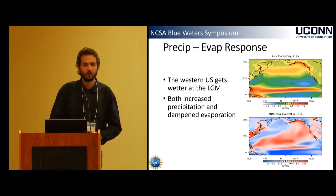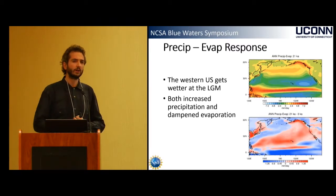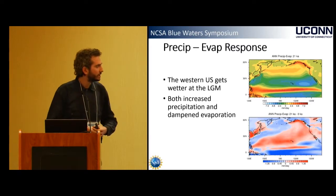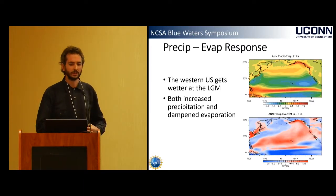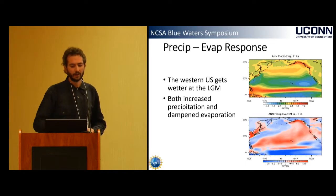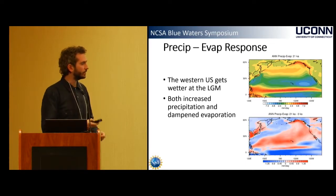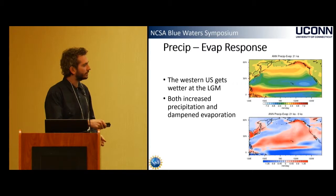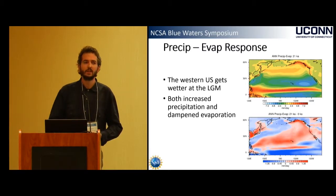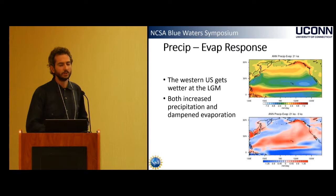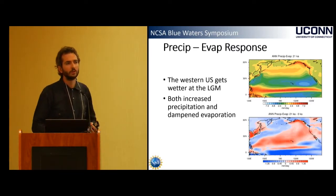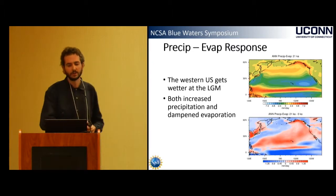Moving on to some preliminary results from the low-resolution model — we haven't done the high-resolution simulations yet. Showing annual precipitation minus evaporation at 21,000 years ago in the top plot, and the difference between 21,000 years ago and the pre-industrial control in the bottom plot. We can see a significant increase in moisture along the west coast of the US at the LGM, as shown in previous models — a result of both an increase in precipitation and a decrease in evaporation.